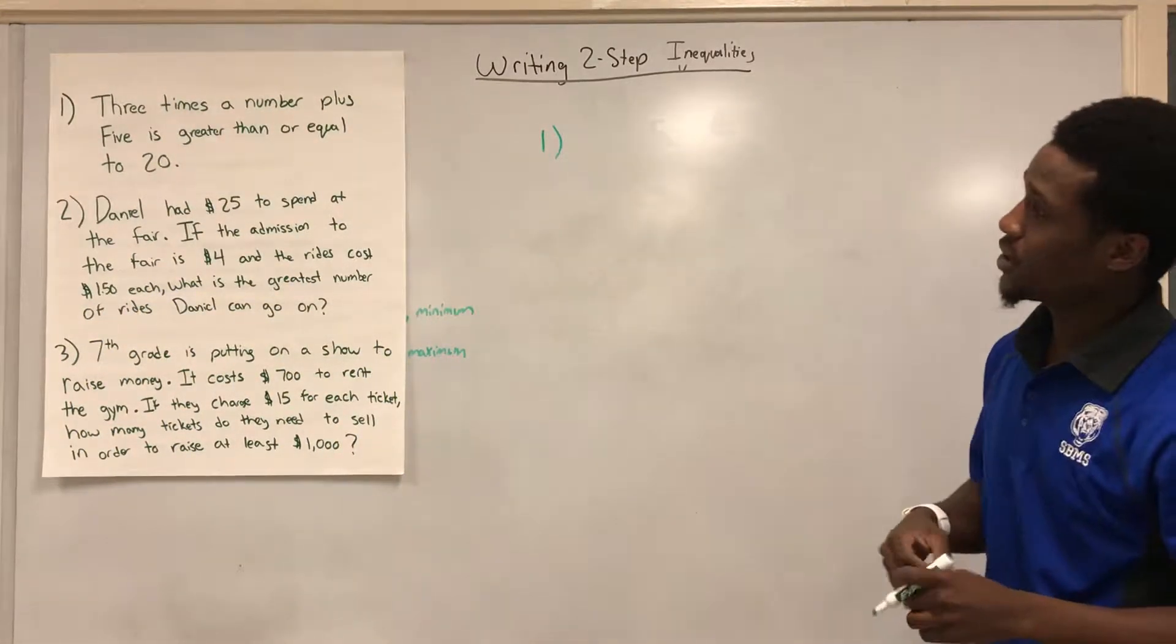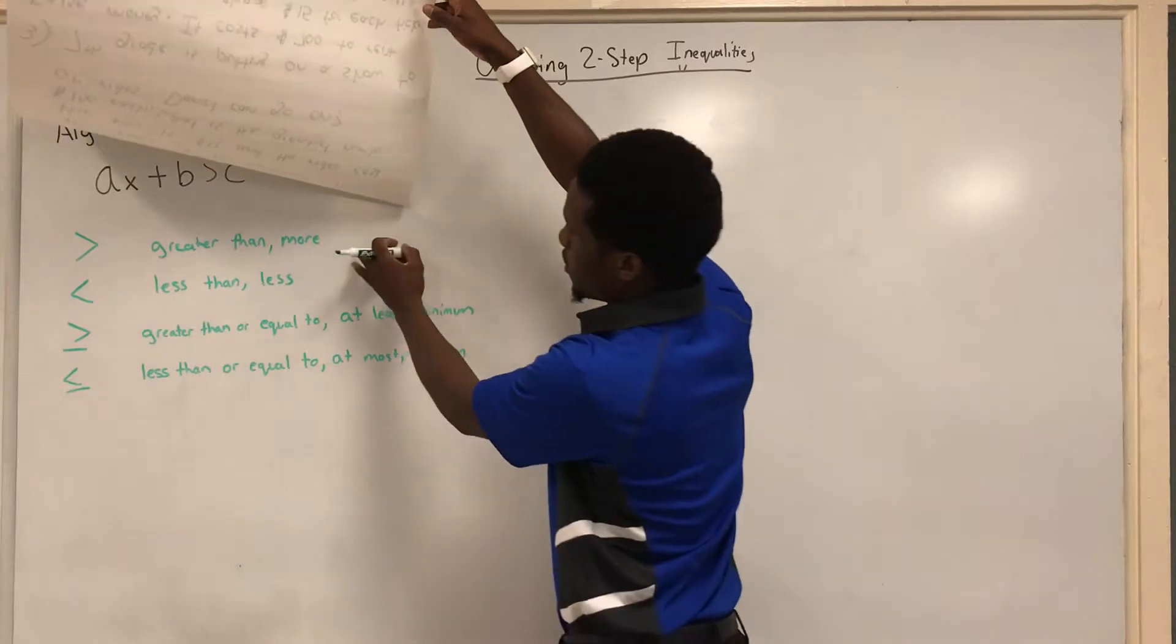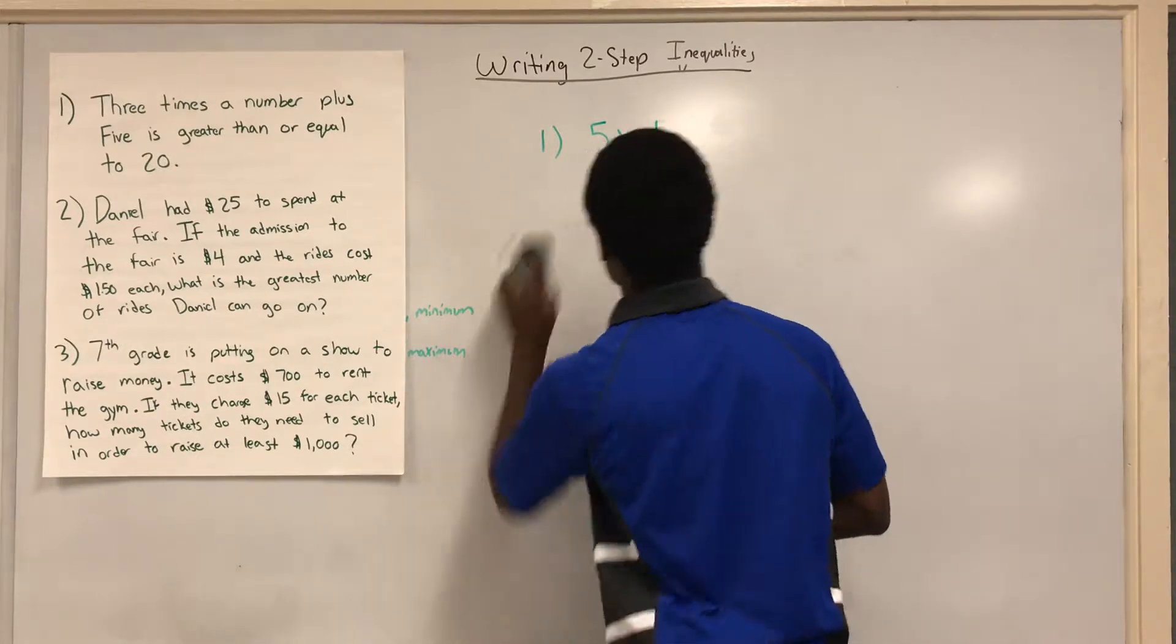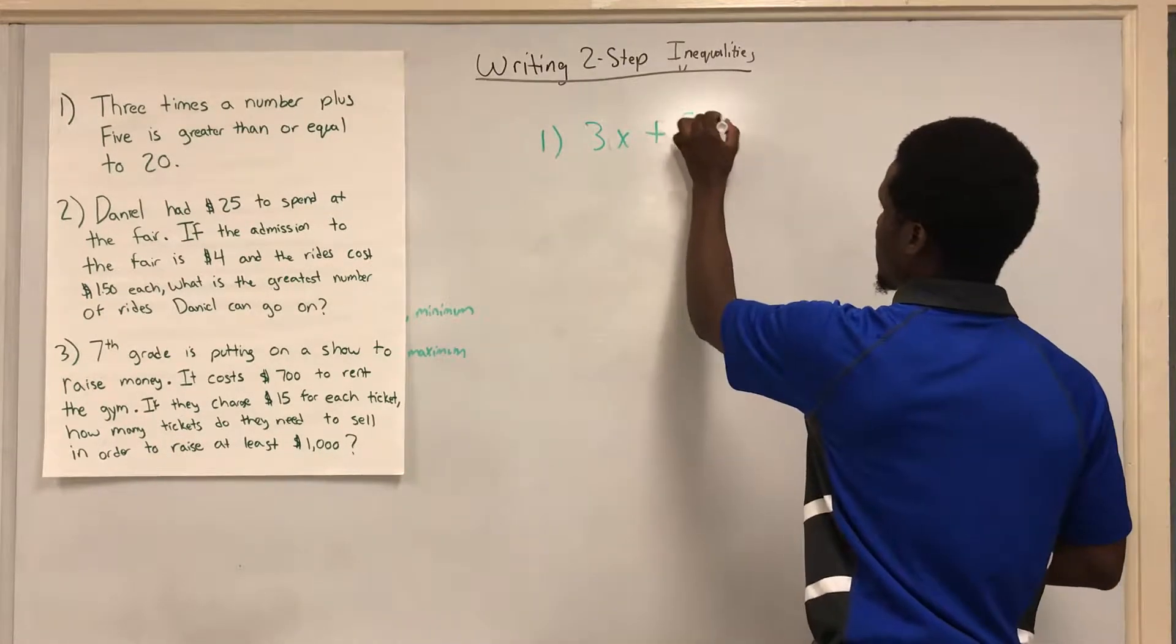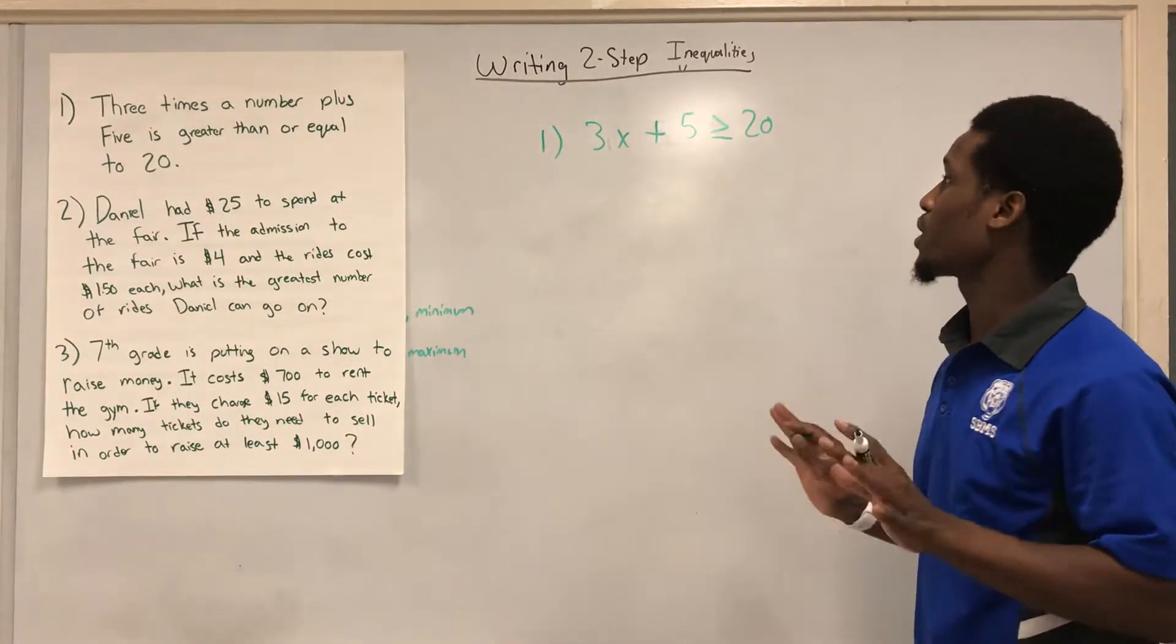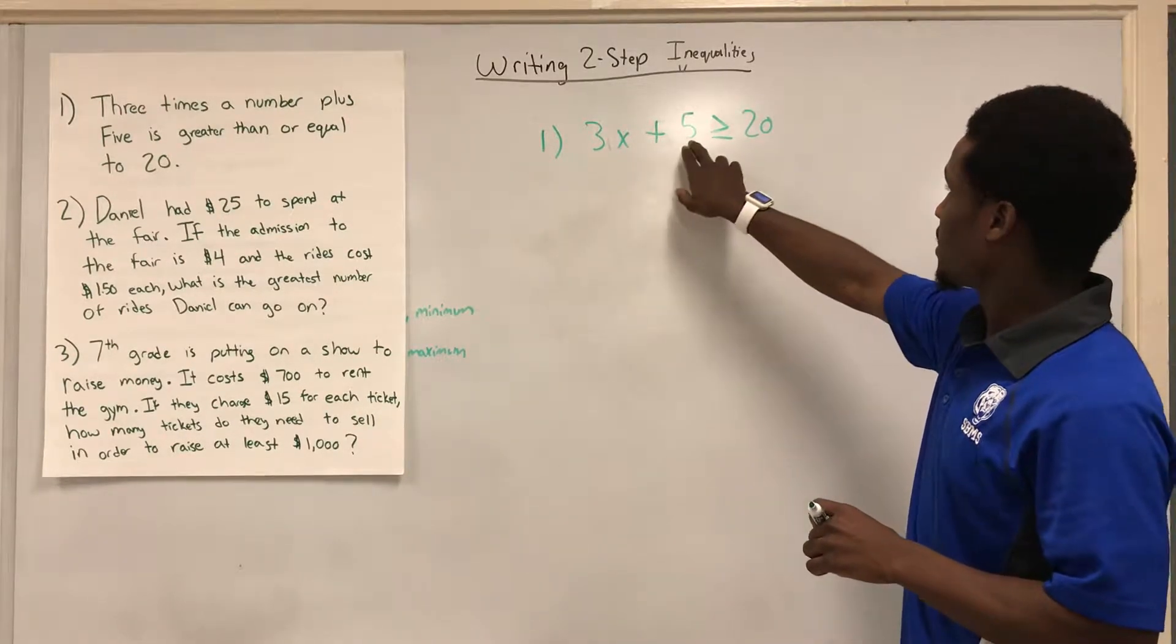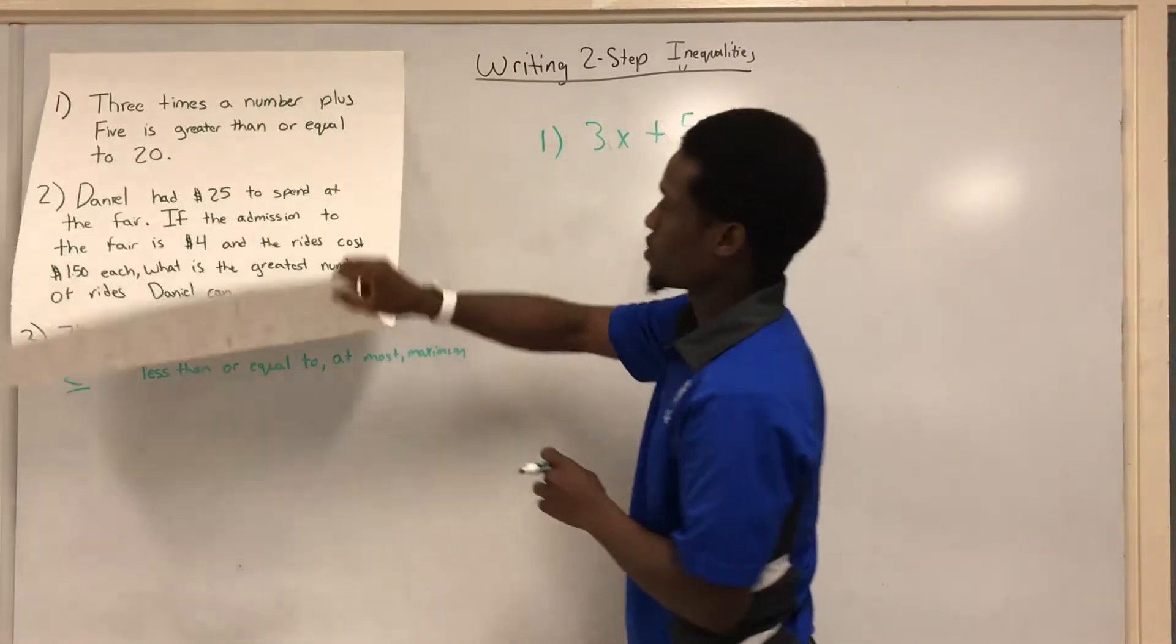Our first one says three times a number plus five is greater than or equal to 20. So I'm just going to look up here on my list. I know that I need greater than or equal to, which is going to be right here. So three times a number plus five is greater than or equal to 20. So this would be my two-step inequality. Now we're not going to focus on solving it. All we're going to focus on here is writing it down. So I could also say three times a number plus five is the minimum or is at least 20. So I could use that different vocabulary as well, at least or minimum.